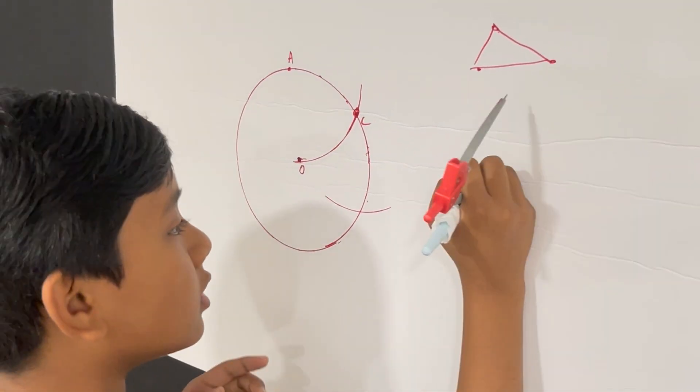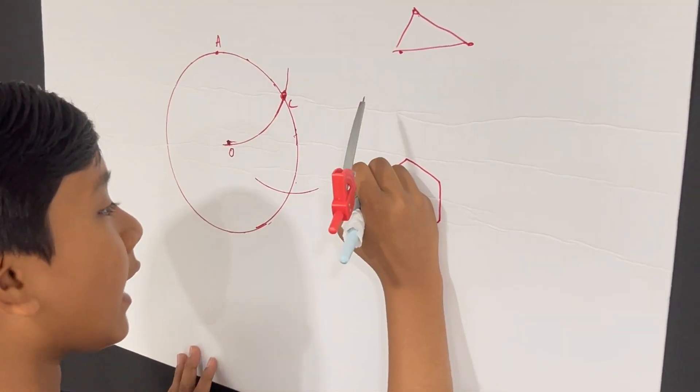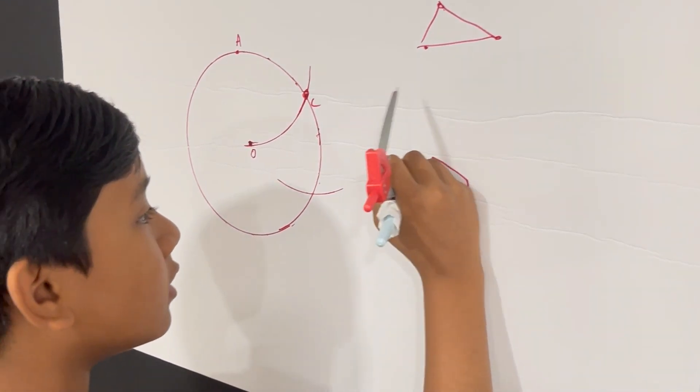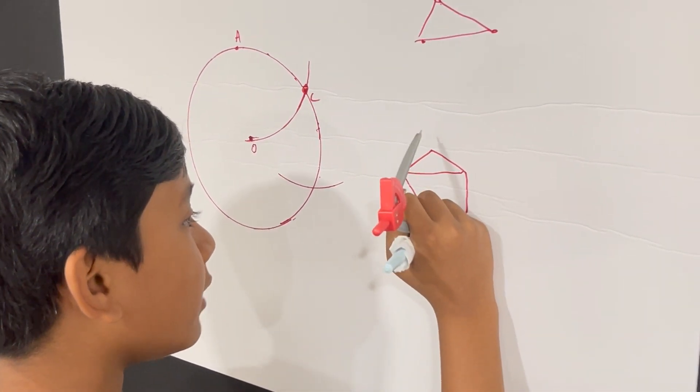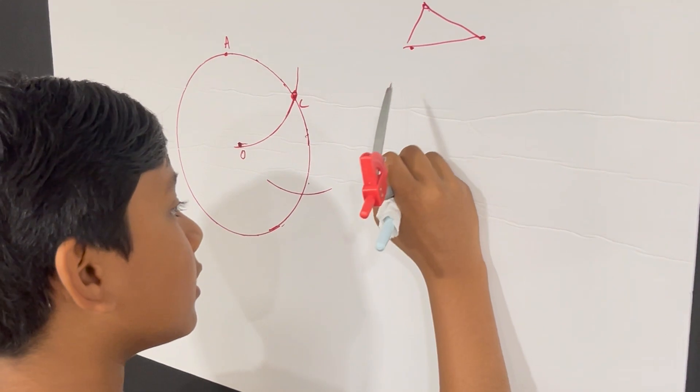So if we take a hexagon and then connect three of its points, you may notice it gives you an equilateral triangle.